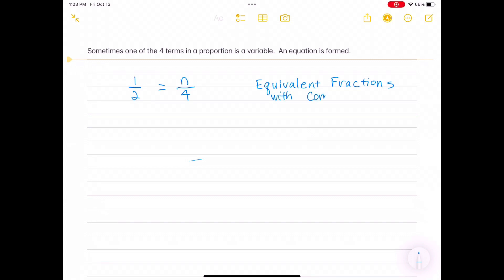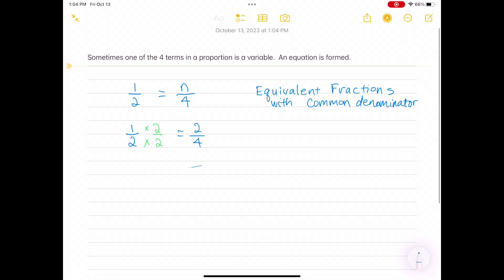To find N in this proportion, we use equivalent fractions with a common denominator. For the fraction one-half, we see that if we multiply the denominator by 2, we get 4. So if we multiply both the numerator and the denominator by 2, we get the equivalent fraction two-fourths, which equals N over 4. Therefore 2 equals N, or if you prefer, N equals 2. And we box our answer.